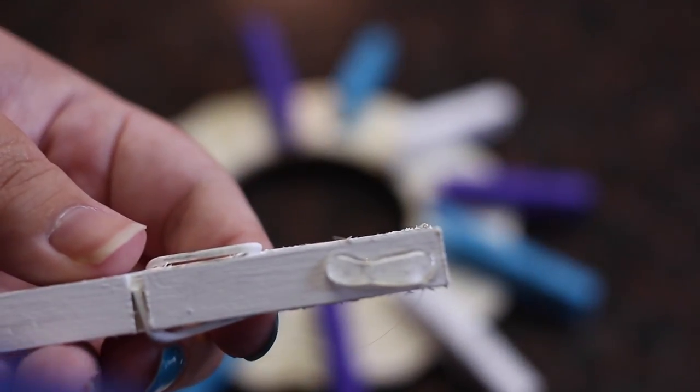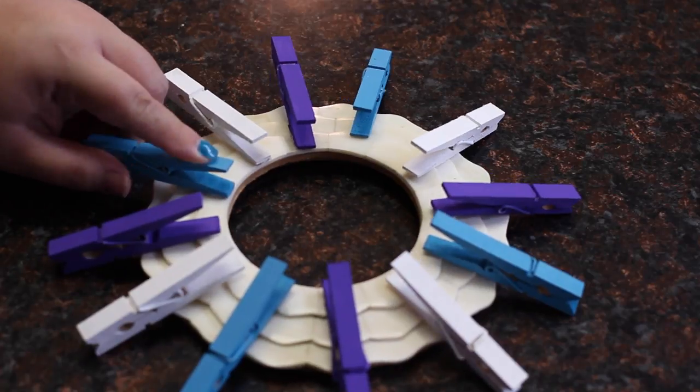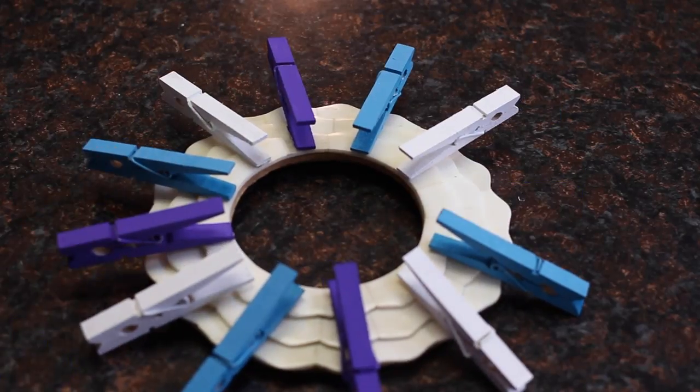Once your clothes pins are in place, go ahead and hot glue them down. Just remember to stay close to the inner circle, or you can alternate the length of the clothes pins so that they aren't the same all the way around.